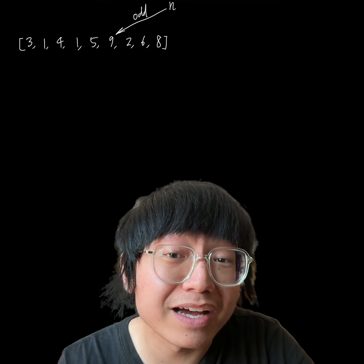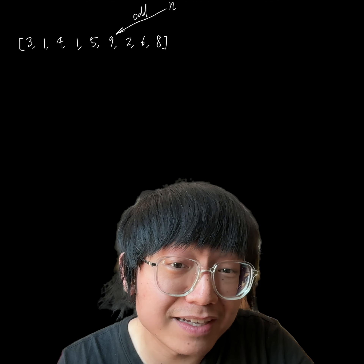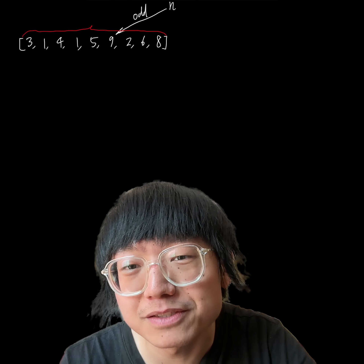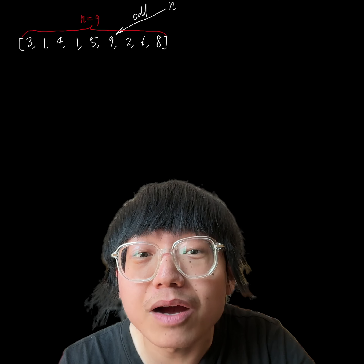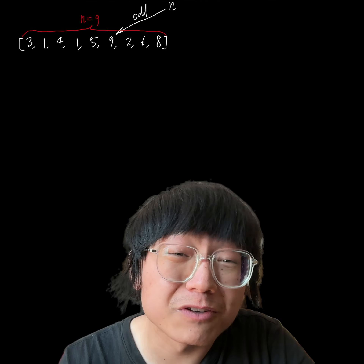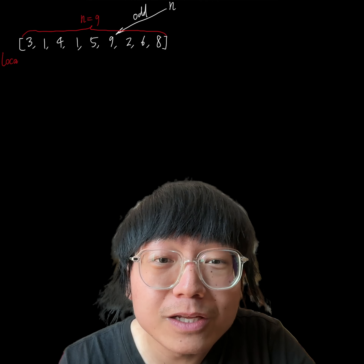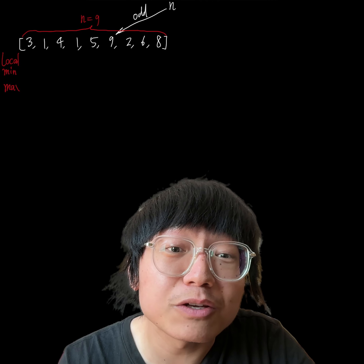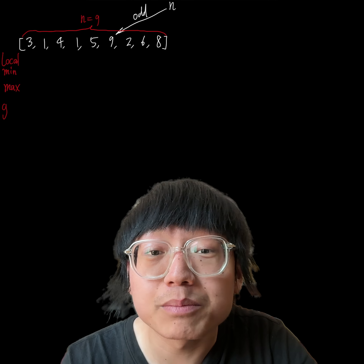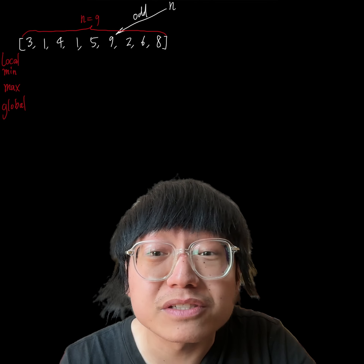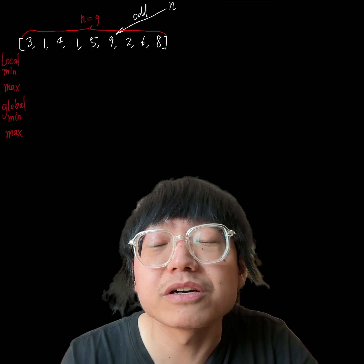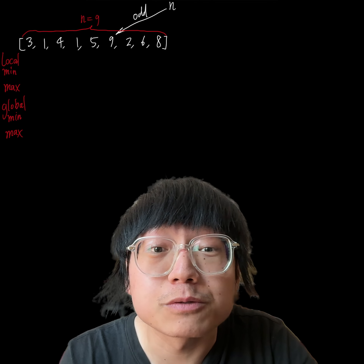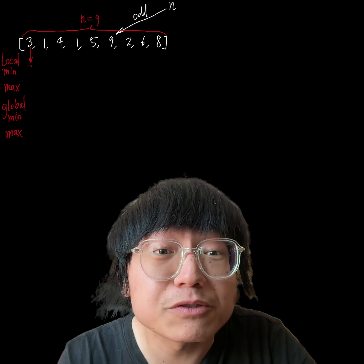In today's video, let me try to explain how to set initial values for finding the minimum and the maximum value based on whether the number of elements n is odd or even. I will use the list 3, 1, 4, 1, 5, 9, 2, 6, and 8, which have 9 elements, making n odd.